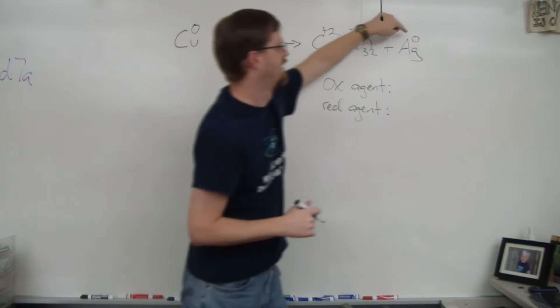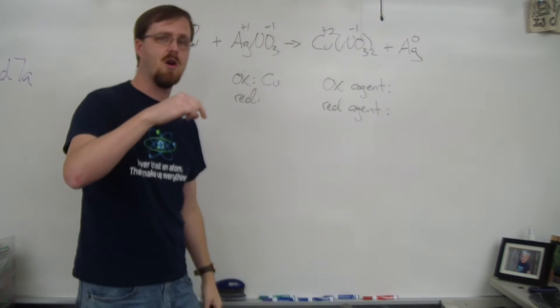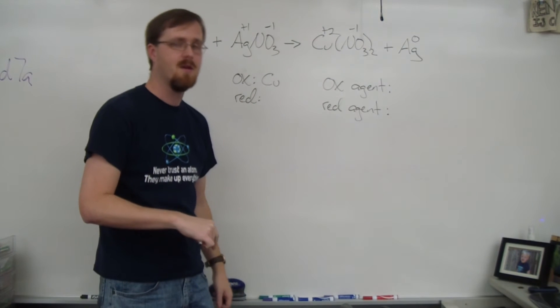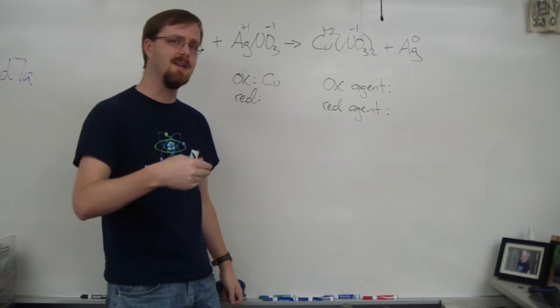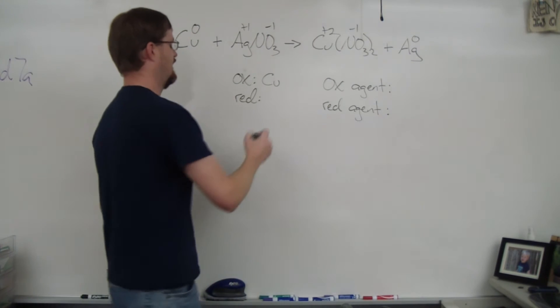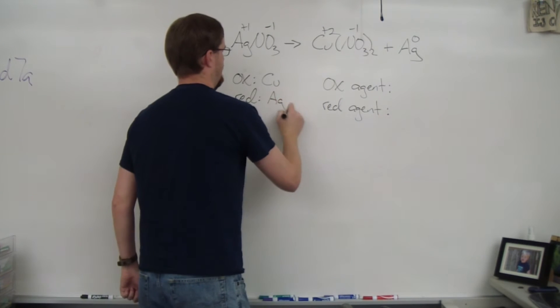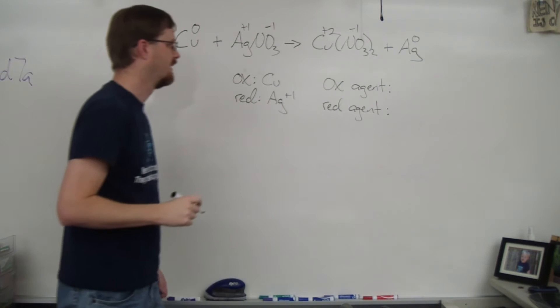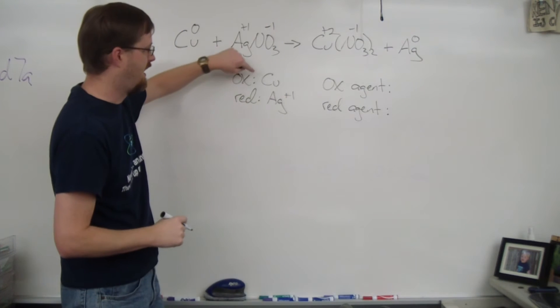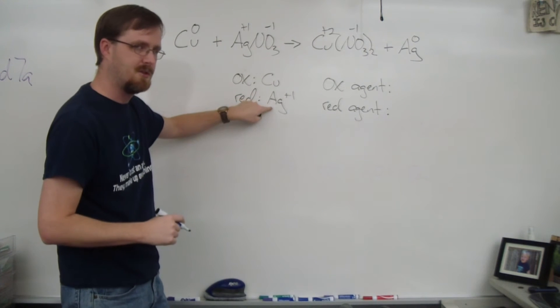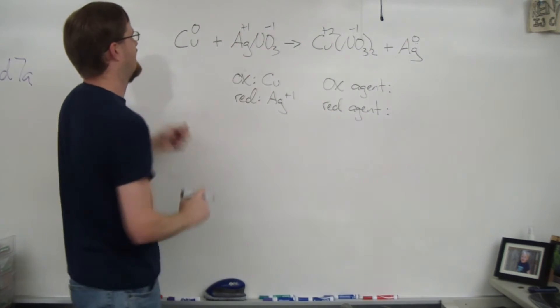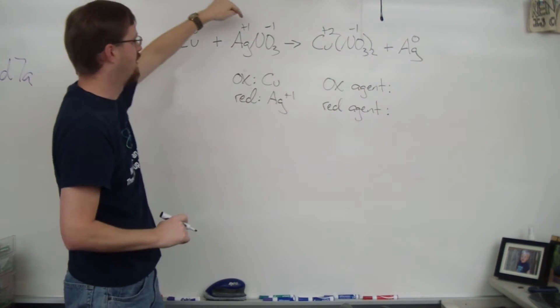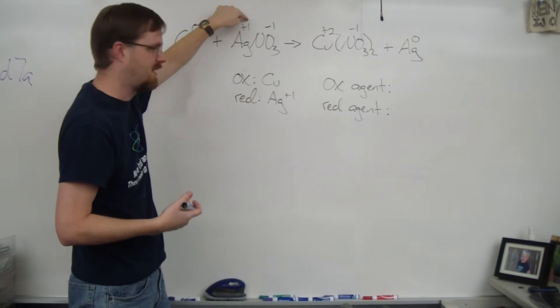Silver is going from +1 down to zero. Its charge is going down because it is gaining electrons, and reduction is gaining electrons. Now you might be wondering why this is just copper and that's silver +1. That's because on the reactant side, copper has a charge of zero and silver has a charge of +1.